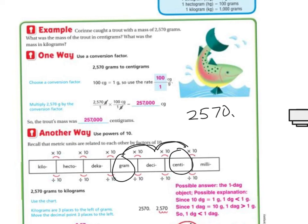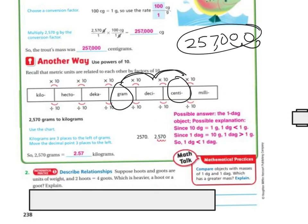So here's my decimal: 1, 2, add my zeros, and look at that - 257,000 centigrams.